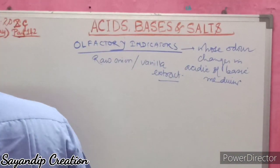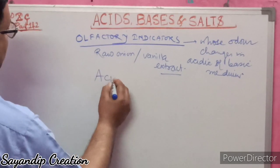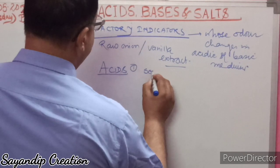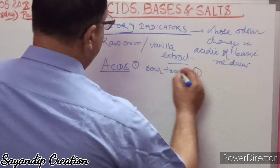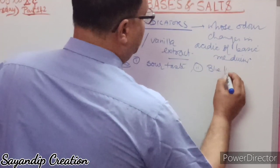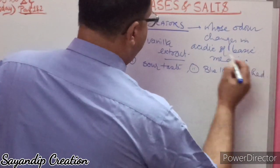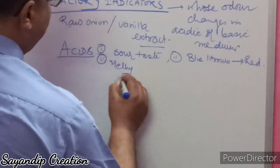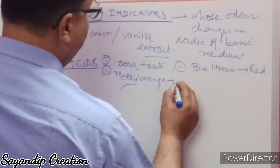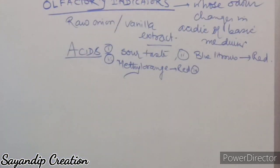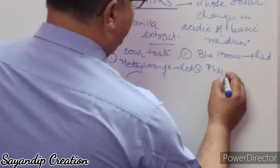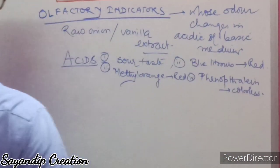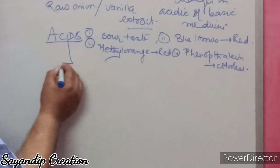Now, what are acids? First, they have a sour taste. Second, they change blue litmus solution to red. Third, they change methyl orange to red. And fourth, there is no change in the color of phenolphthalein — phenolphthalein remains colorless in acidic solution.